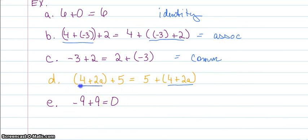But I've changed the order. In this one, 4 + 2a is first, and in this one, 4 + 2a is second. So it is another version of the commutative property. I know it's not the associative because who they were associating with did not change.